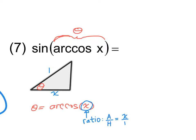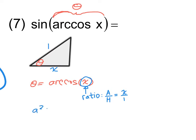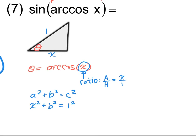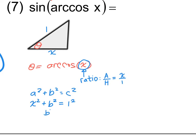To find the missing side, a little Pythagorean theorem: x² plus b² equals 1². So b² equals 1 minus x², making b equal to the positive square root of 1 minus x squared. We only care about the positive value because we're talking about the length of a side, not a position on a coordinate axis, so direction is not important.